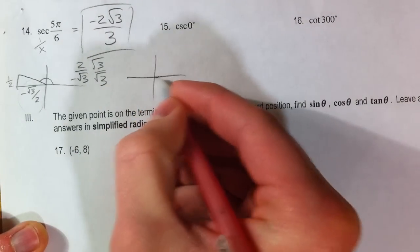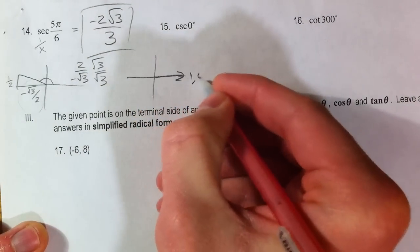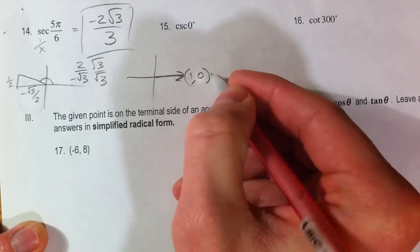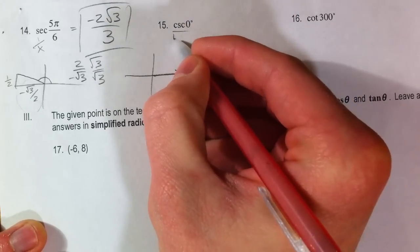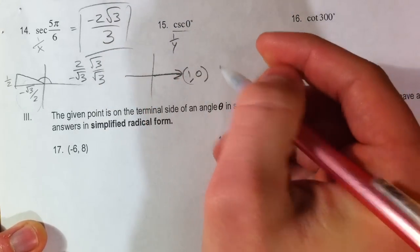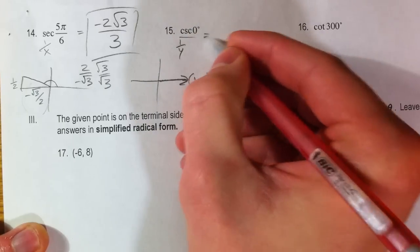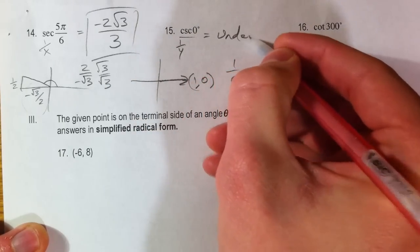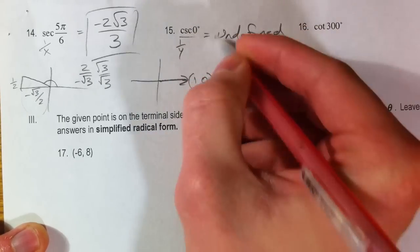Cosecant of 0. 0 is straight across. You get (1, 0) because we've gone to the right. Cosecant is the reciprocal of the y value. So reciprocal of 0 is undefined. Cannot divide by 0.